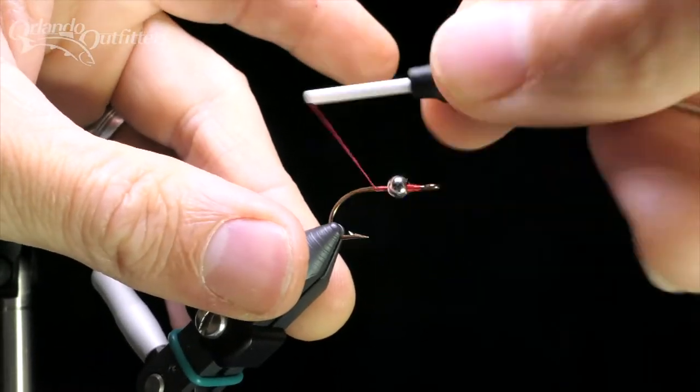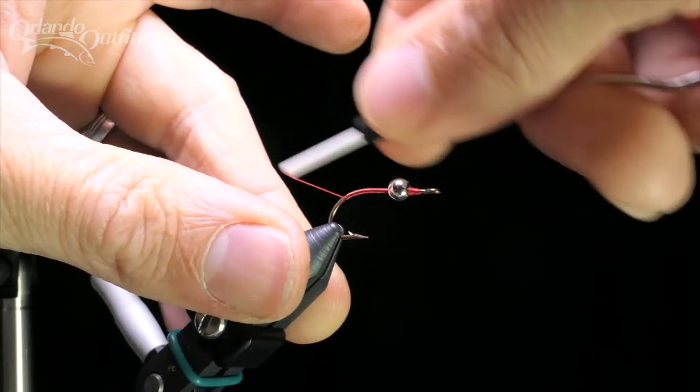Bring the thread around behind the bead and wrap the thread down to the bend and back up, creating a thread base.